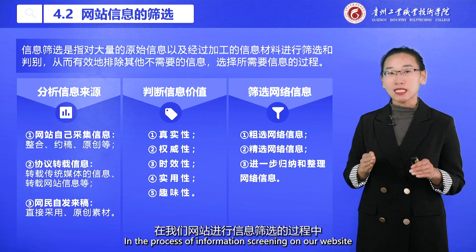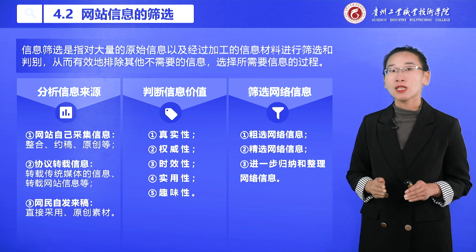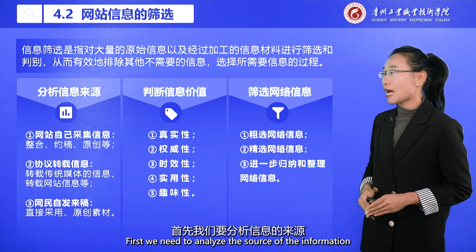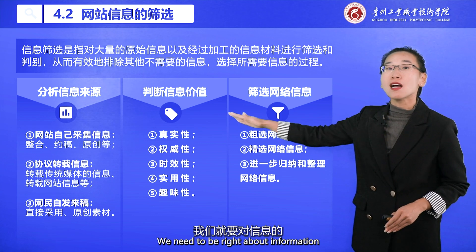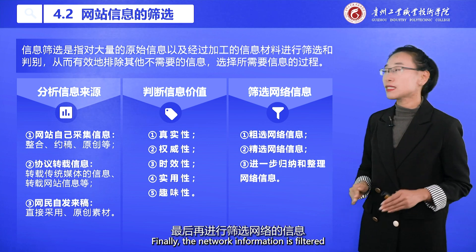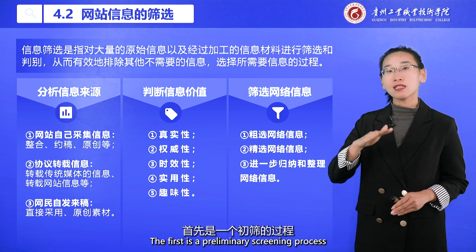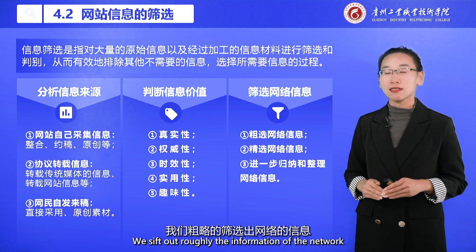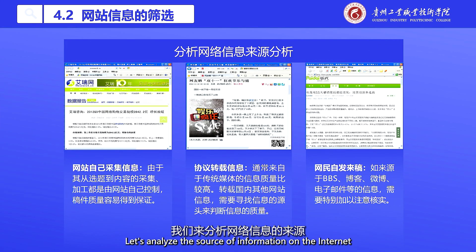In the process of information screening on our website, we need to filter and process a large amount of information in order to eliminate unwanted content. First, we need to analyze the source of the information and judge its value. In this process, we need to evaluate information by its authenticity, authority, timeliness, practicality, and interest. The network information screening process is generally broken down into three steps: the first is a preliminary screening, where we roughly sift through network information; then we select from that; and finally we summarize and sort it out.